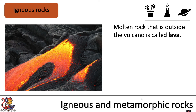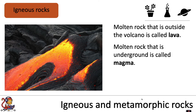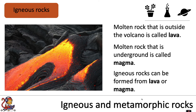Molten rock that is outside the volcano is called lava. In the image we've got molten rock that has flowed outside of the volcano — at this stage we call it lava, and you can see it starting to cool down. The molten rock that is underground, whilst still inside the volcano, is called magma. Igneous rocks can be formed from lava or magma.